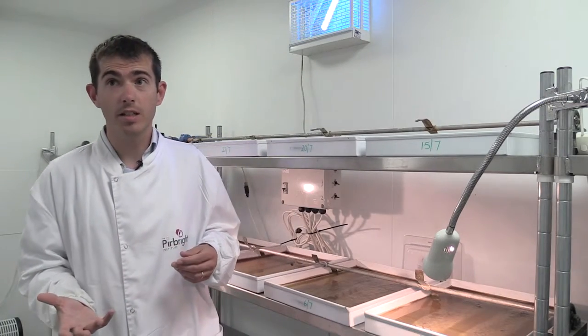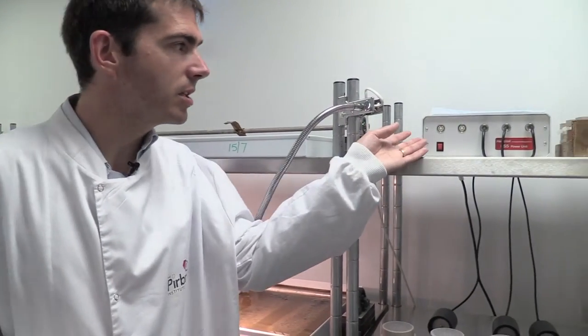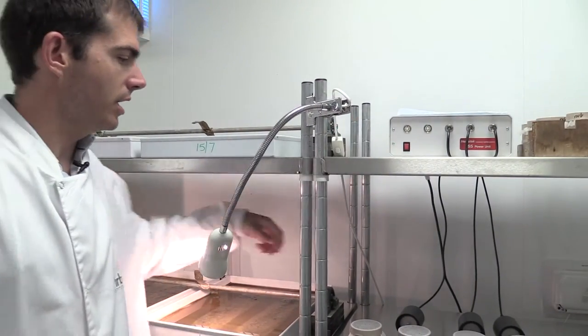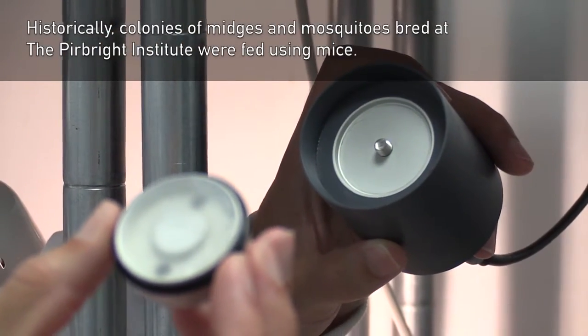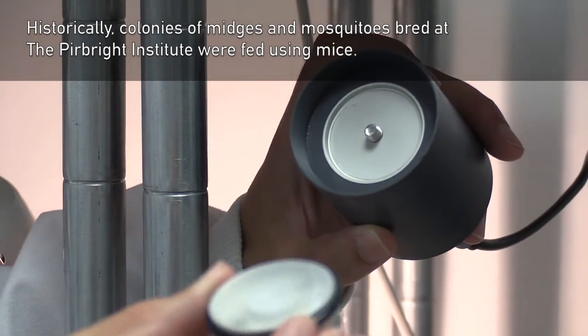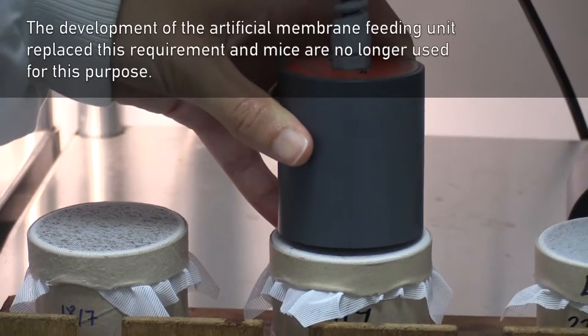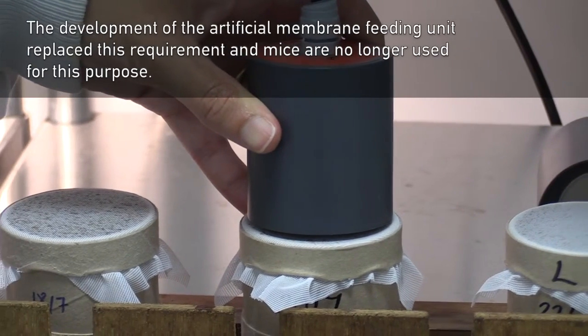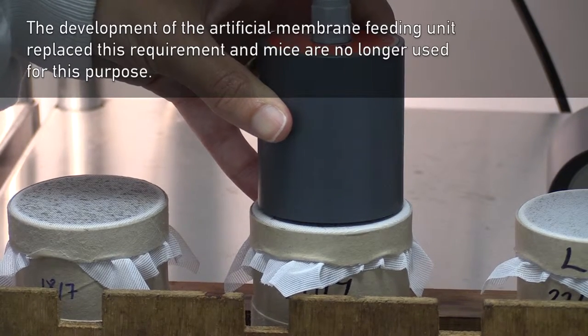In order to blood feed these insects we use this Hemotek unit here with little heater units. I can bring that to here. These have a little reservoir of blood that fits over the top of here which heats it to 37 degrees. A little reservoir of blood that the midges can feed through a membrane, and so the adult midges are in these pots.